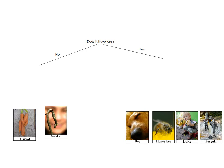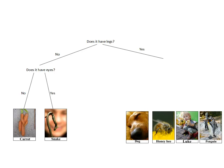Looking at the organisms with no legs, I now have to find another physical feature that I can clearly and easily use to separate these. In this case: does it have eyes? Add two lines and we have the first side done.